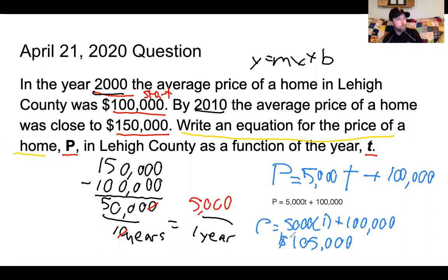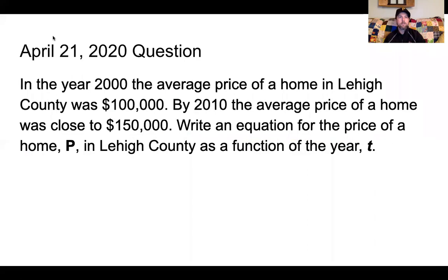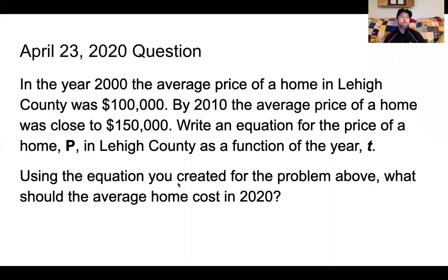So I said that it was important that we get this equation correct because we are going to be using that for today's question. So I'm going to clear this out and move over. So as you can see, I left the word problem from the 21st in today's question, because using this equation we're going to figure out what should the average home cost? And I'm going to put an emphasis on should, what should the average home cost this year, the year 2020.